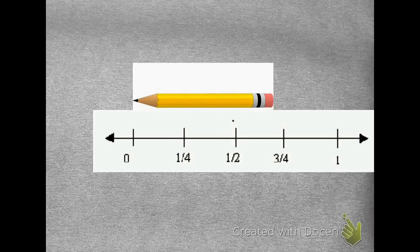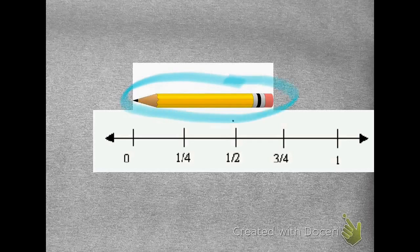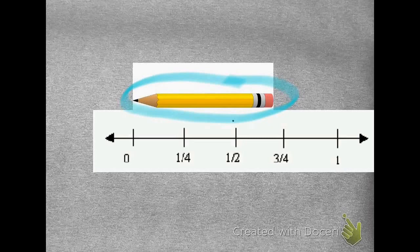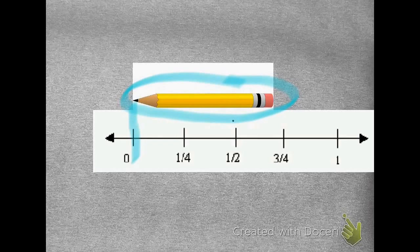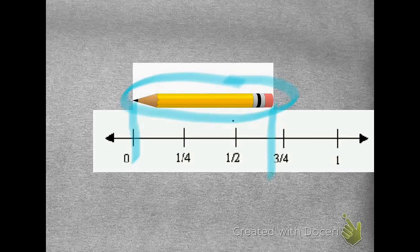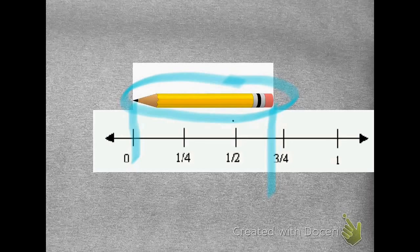And what I did was, I have a pencil here. I'm going to estimate how long I think that pencil is. So I lined up the point with zero right here. I'm looking at it, and I see that it's not quite to the three-fourths. It's not quite to the one-half. It's not perfect. But that's okay. Because we've learned with estimating, it doesn't have to be perfect. You just round to the nearest point.